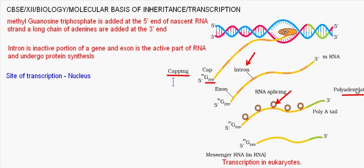Capping is the process in which methylguanosine triphosphate is added at the 5 prime end of the newly synthesized RNA. Polyadenylation involves adding a long chain of adenines at the 3 prime end of the newly synthesized RNA. Both processes protect the nascent RNA from ribonucleases or any other enzymes.